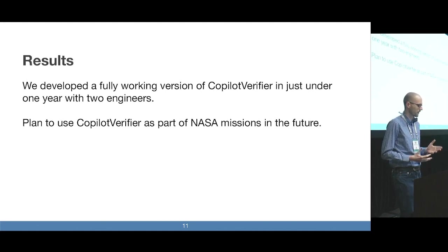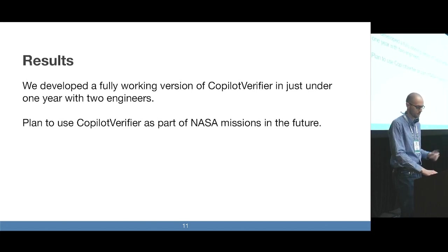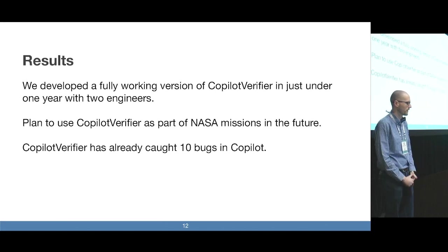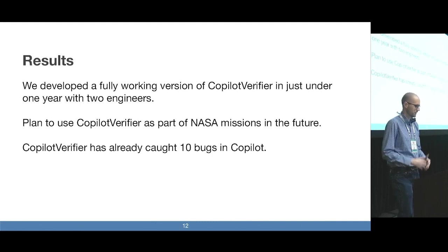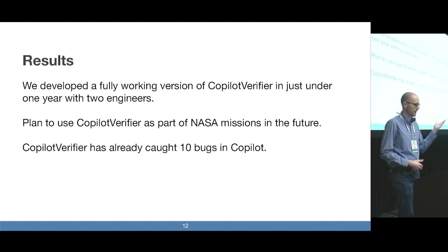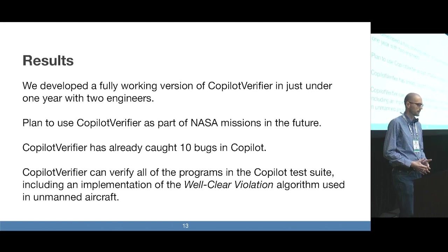There's a pretty high bar for safety if you want to use some piece of code in a NASA mission, so naturally there's some red tape we have to clear first. In the meantime, we've been trying Copilot Verifier on some examples that look like things you might find on a NASA mission. Through this process, we've already discovered 10 bugs in the Copilot compiler — some include things like potential memory unsafety. We also ran Copilot Verifier on the corpus of programs in the Copilot test suite, and it was able to verify all of them.